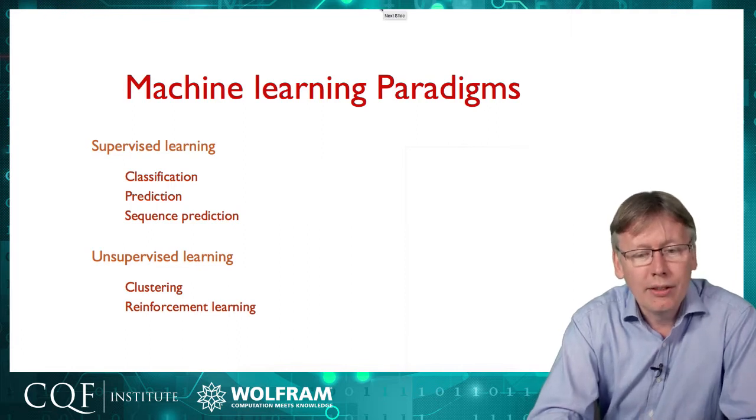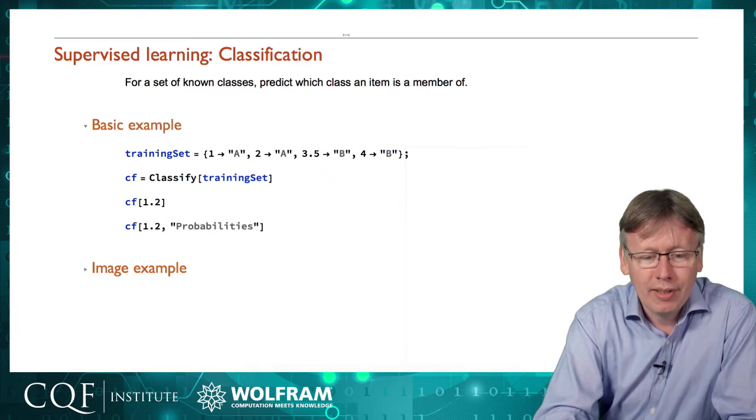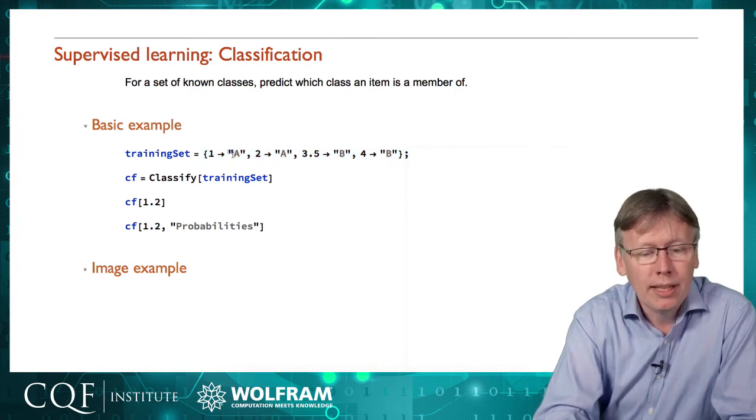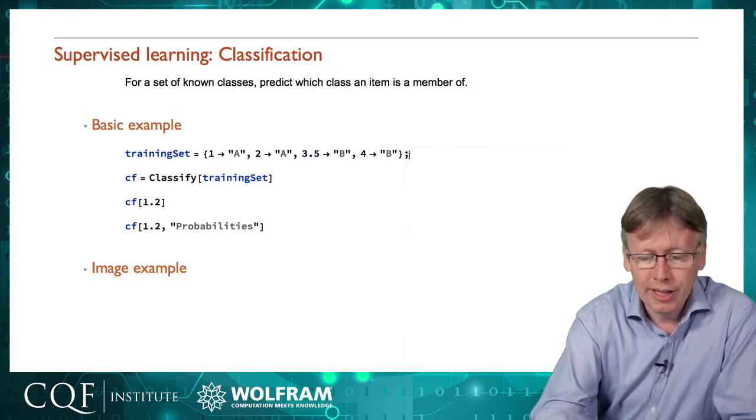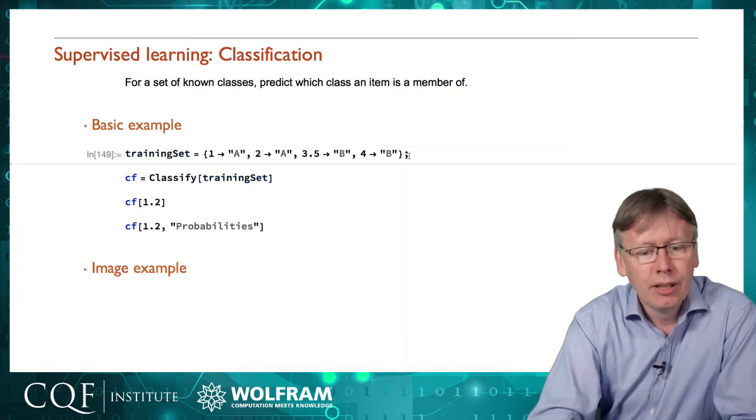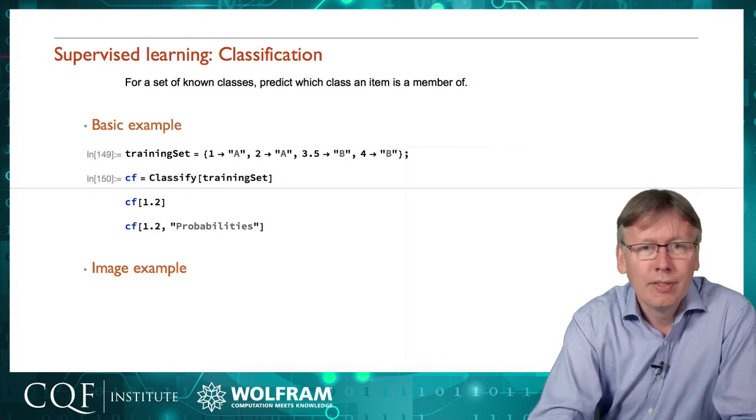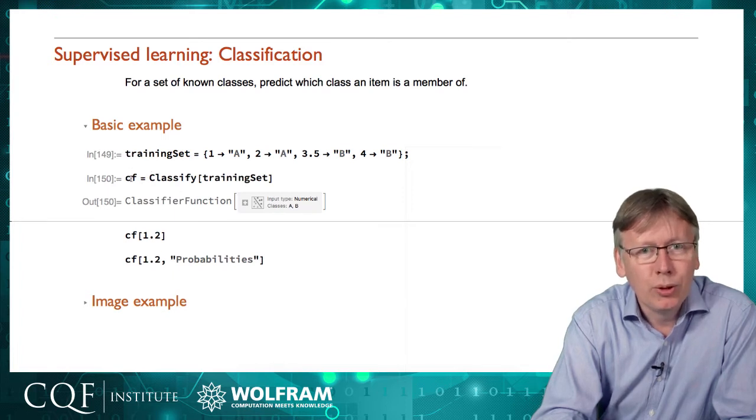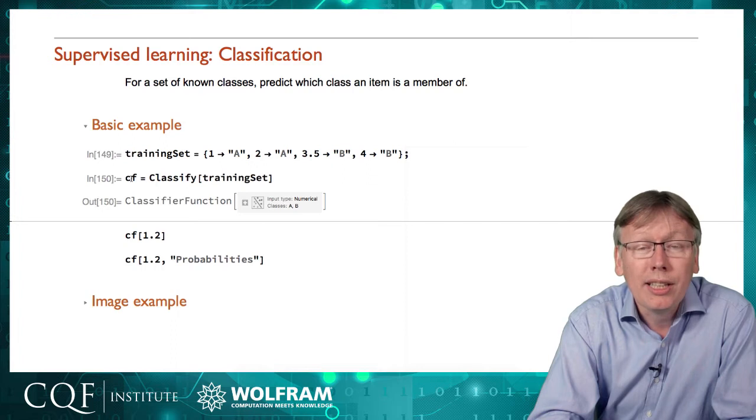Let's look at the task of classification. I'm going to start with the most trivial example. I've got some data with just four data points. Here's my training data. This is supervised, so I'm going to tell it the correct answer that an input of one is in class A, and so is two, but three and a half is in class B, and four is also B. In the Wolfram language, I press shift return to execute this line and teach the computer. Then I ask it to classify that training set. The Wolfram language really helps here—I haven't had to say anything more than the task I'm trying to achieve. It's produced a classifier function which I've stored in this symbol.